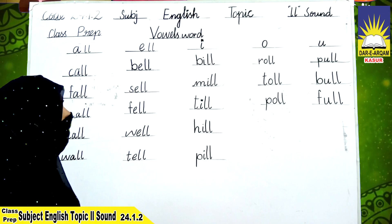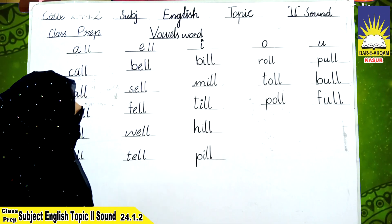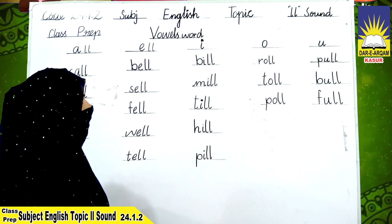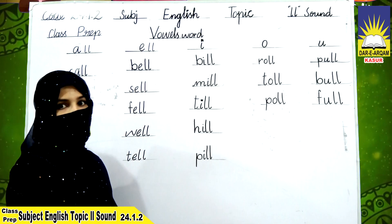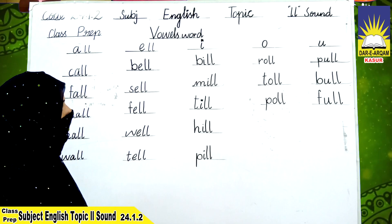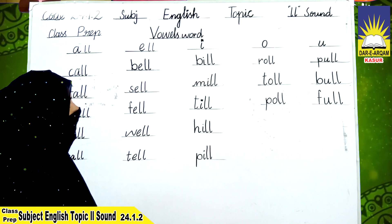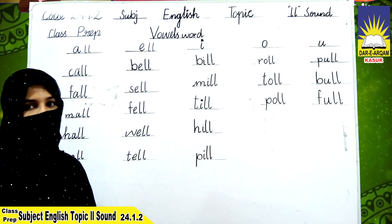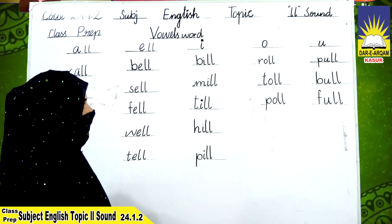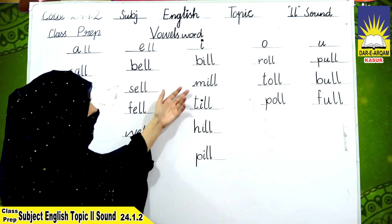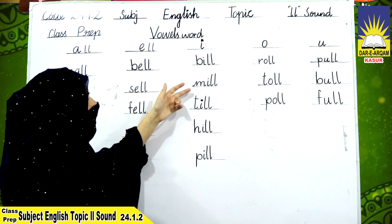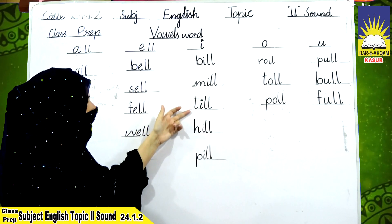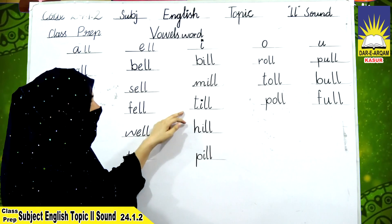Similarly, when this I letter attaches with the LL sound: I-L-L — ill. The first example is B-I-L-L: bill — B, ill, bill. M-I-L-L: mill — M, ill, mill. T-I-L-L: till — T, ill, till.